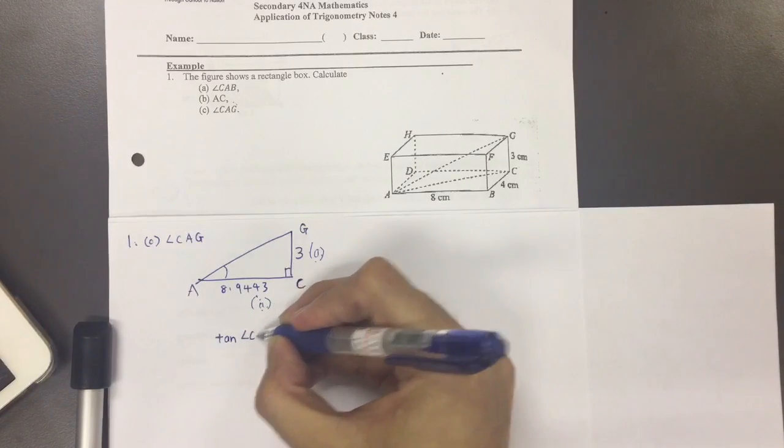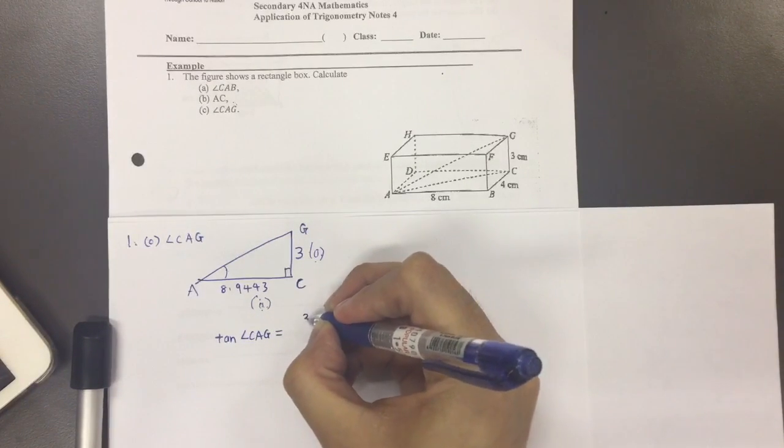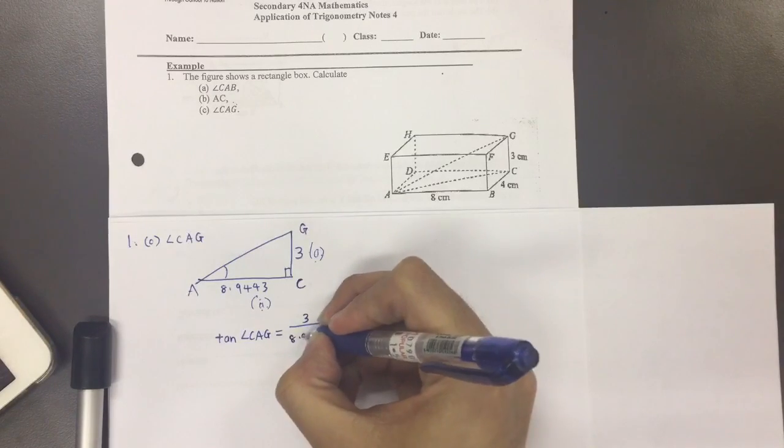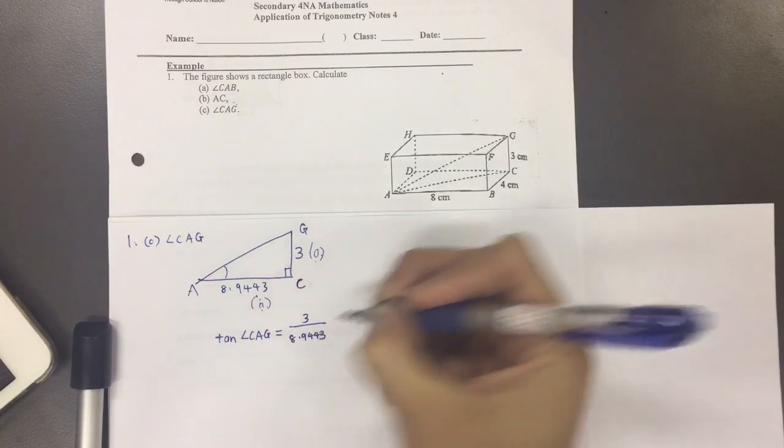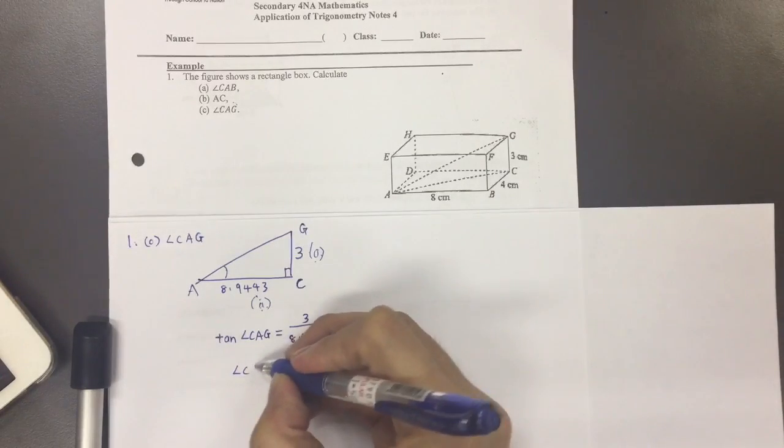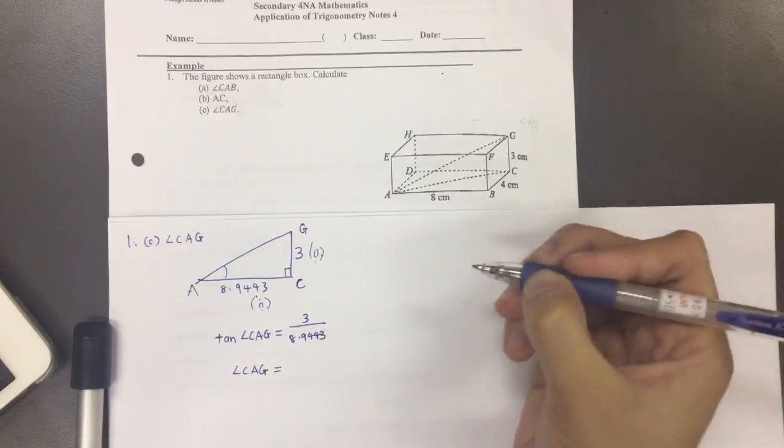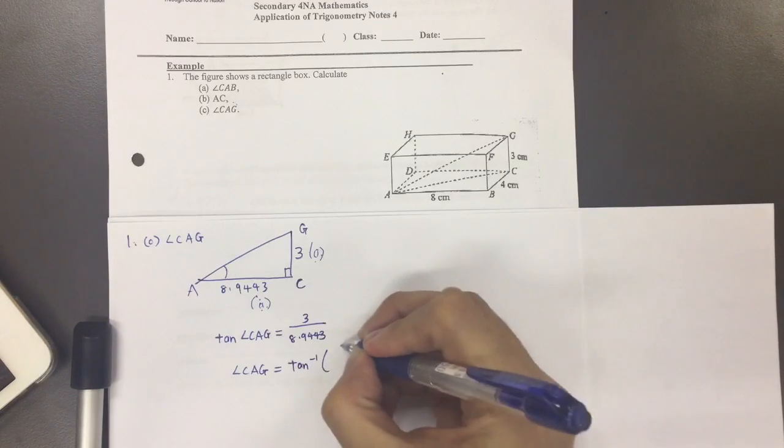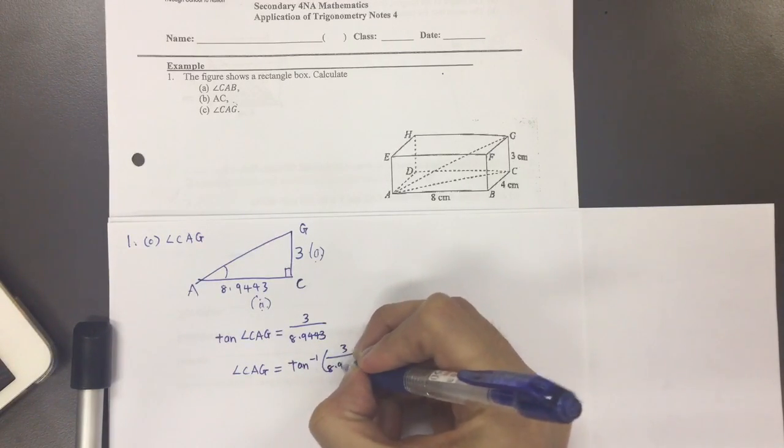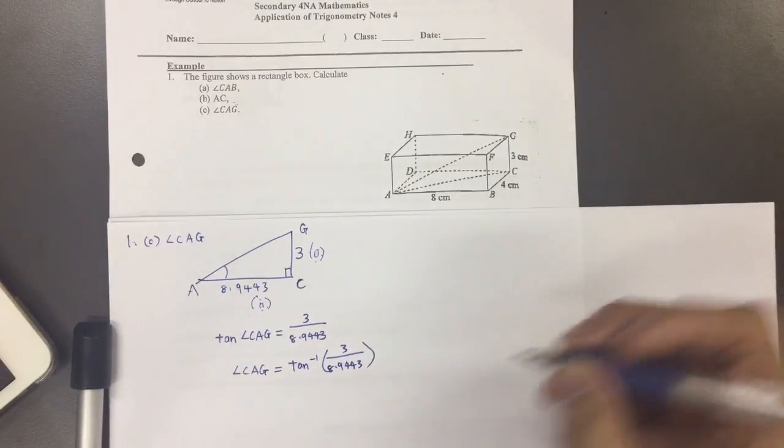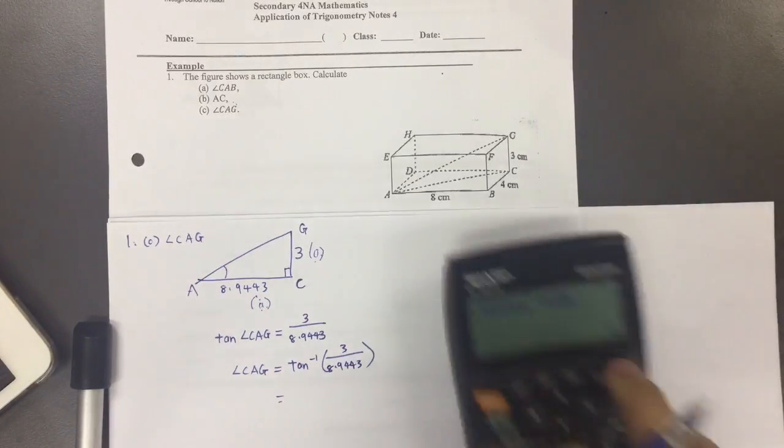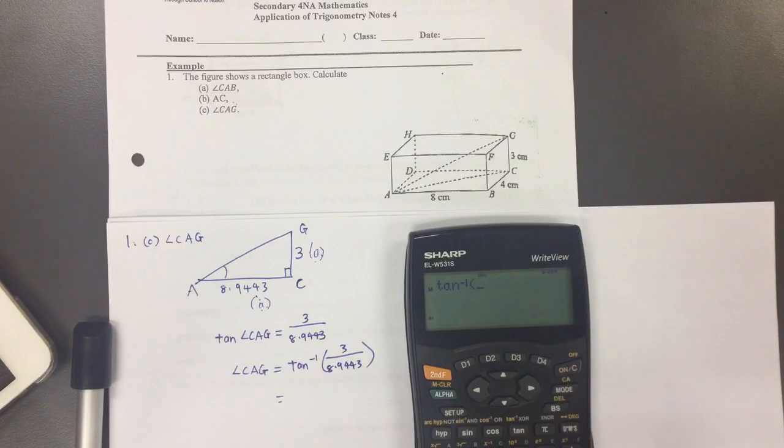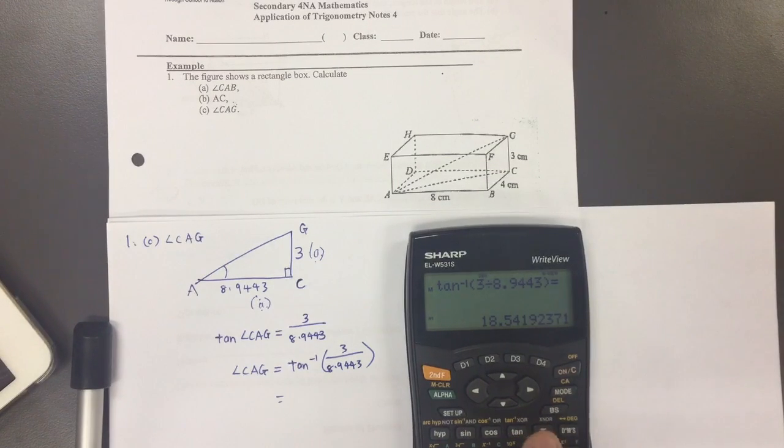Tangent of the angle CAG gives me the opposite side 3 over 8.9443, the adjacent side. So what do I do to find angle CAG? I actually bring tangent over to get tangent inverse of 3 divided by 8.9443. So let's press the calculator. Tangent inverse 3 divided by 8.9443. You get 18.5.